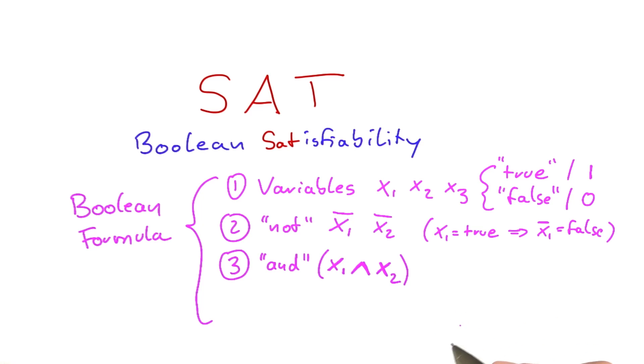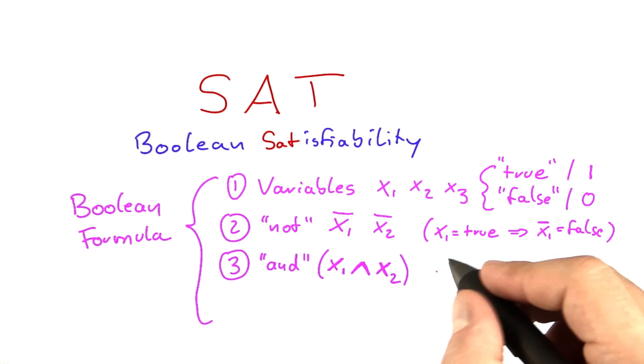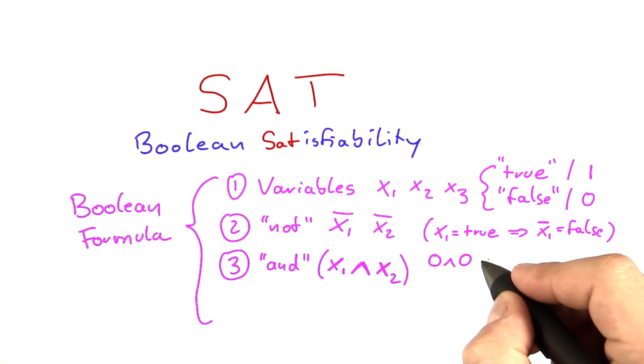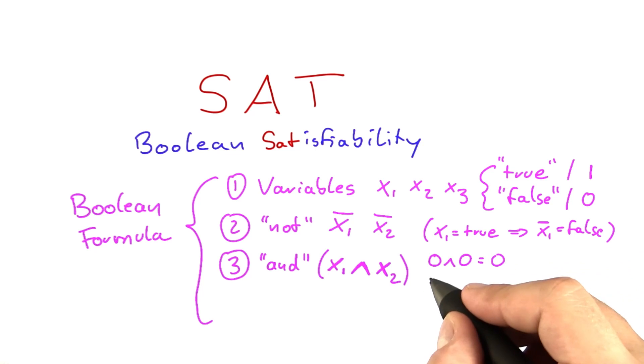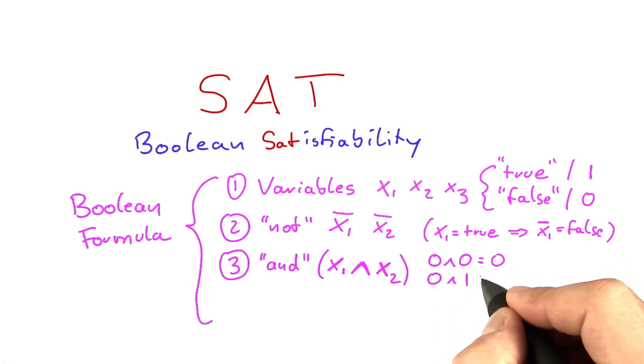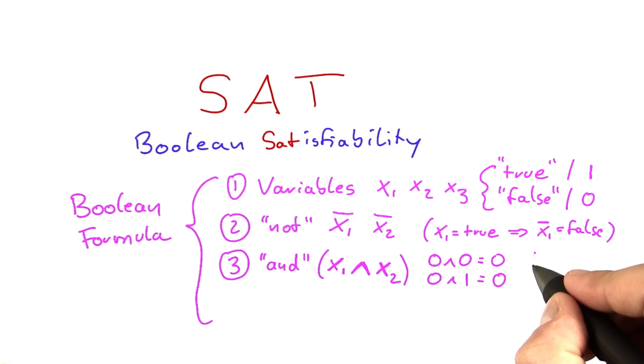I'm going to write this as 1s and 0s just to make it shorter, but you know that 1 stands for true and 0 stands for false. So 0 and 0 equals 0, 0 and 1 equals 0, 1 and 0 equals 0, and only 1 and 1 equals 1.